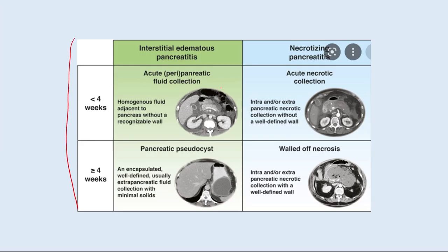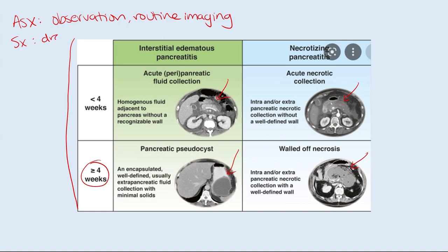To recap the table: acute collections don't have a defined wall, while more chronic ones like pancreatic pseudocyst and walled-off necrosis have a very well-defined wall, developing greater than four weeks after the initial pancreatitis. Management: if asymptomatic, observe conservatively and do routine imaging for four to six weeks. If symptomatic, perform a drainage procedure — usually endoscopic ultrasound-guided drainage from inside the GI tract, though percutaneous drainage is also possible. If symptoms recur, proceed to necrosectomy, removing the whole necrotic walled-off area.